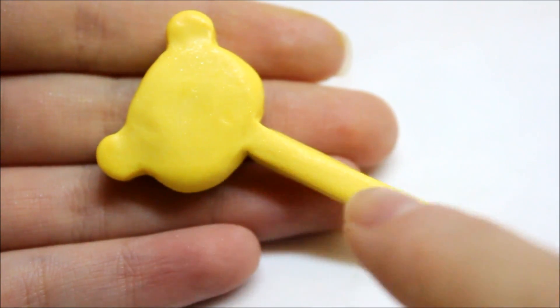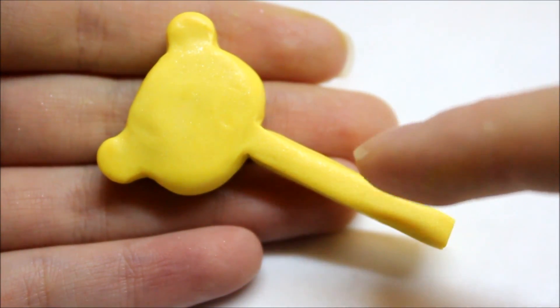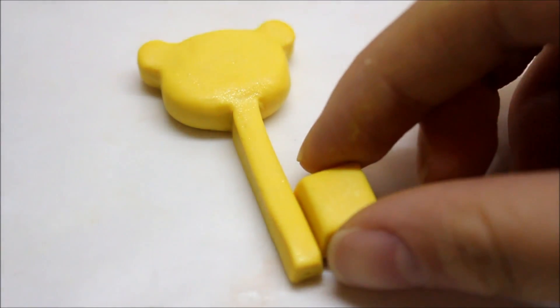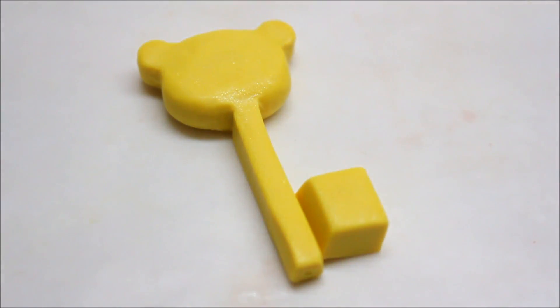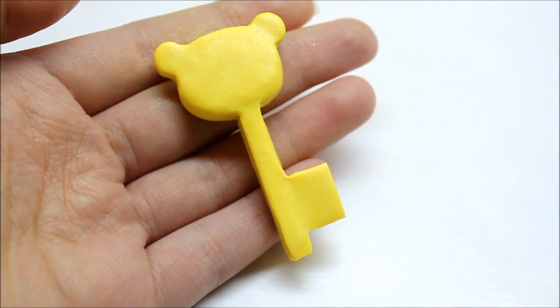After blending in the stick part to the head, we are going to make the little key portion. With the rectangular piece, we are going to blend this into the stick. Here is what it should look like after you've blended it out.